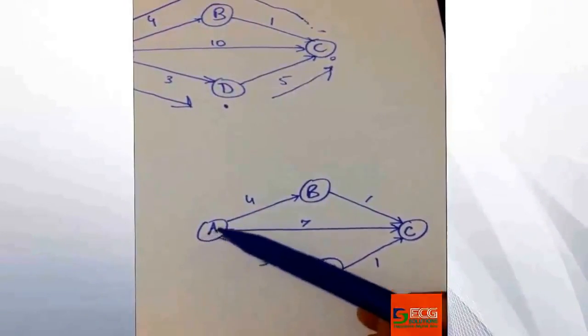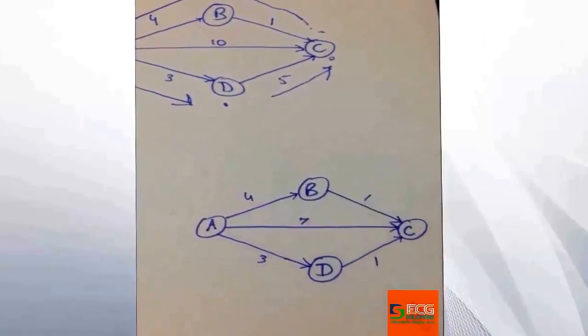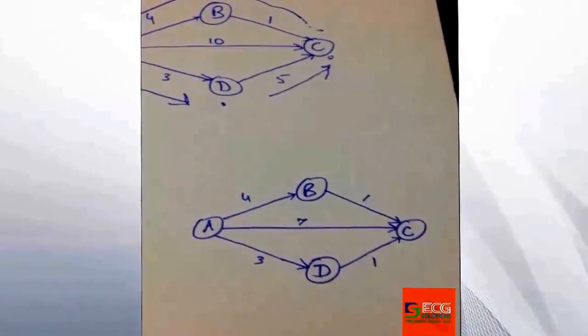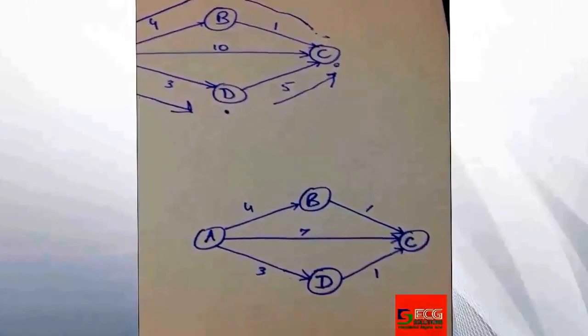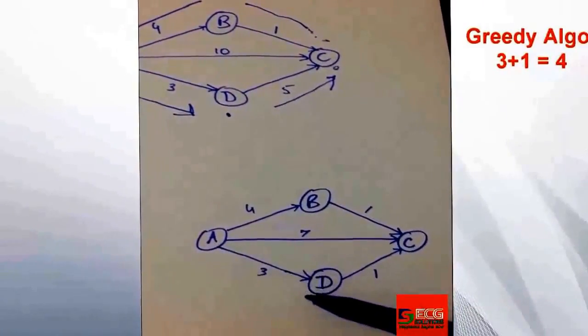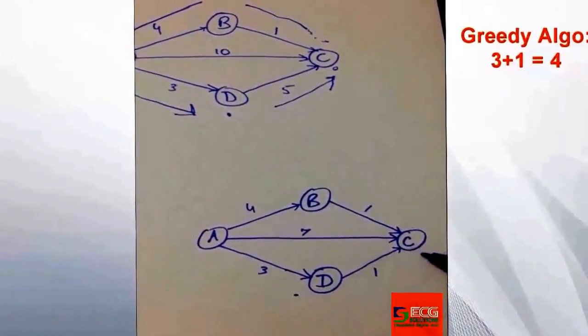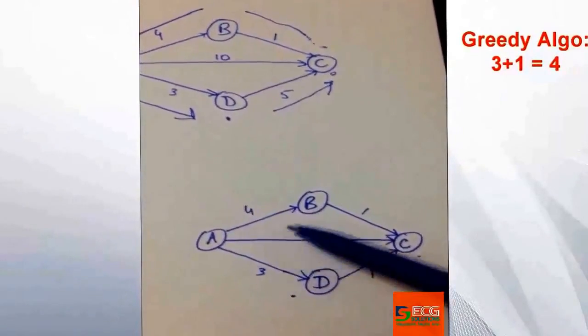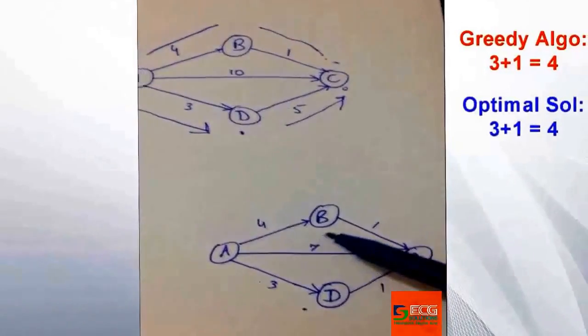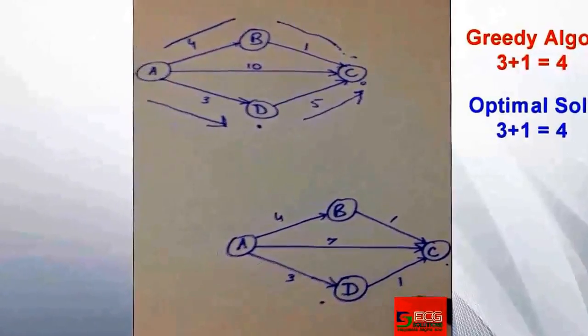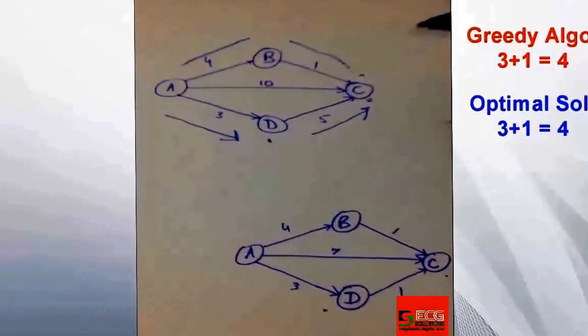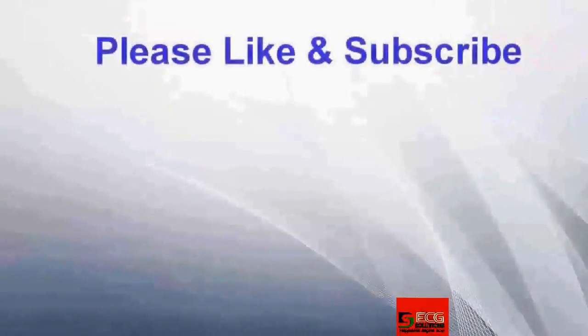We will move from D to C as it is 1. So the greedy algorithm will find a solution 3 plus 1. If we find the optimal solution in this graph, it is also 3 plus 1. Thanks for watching my video and please subscribe.